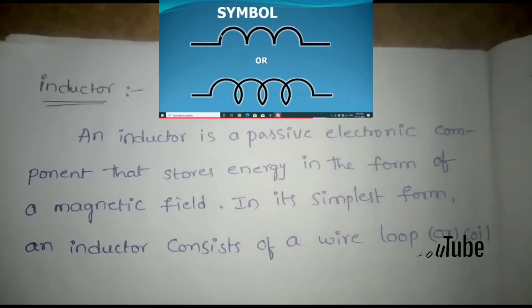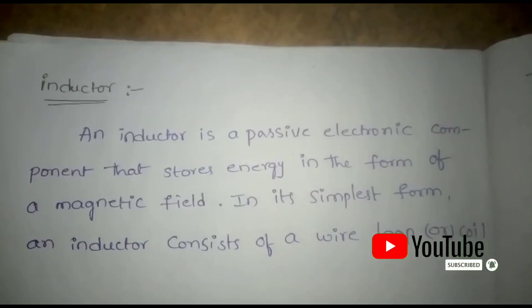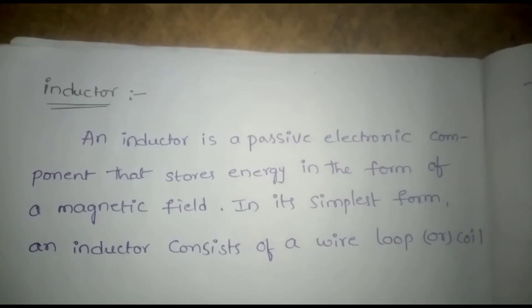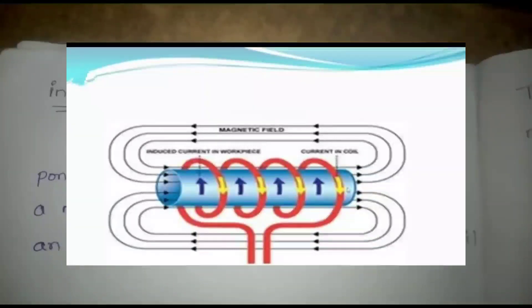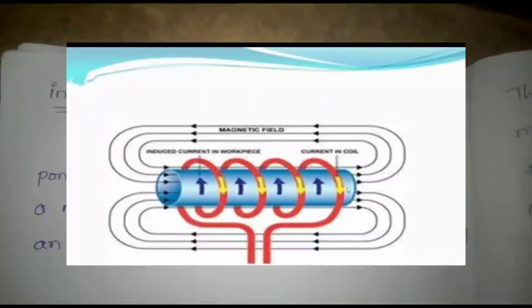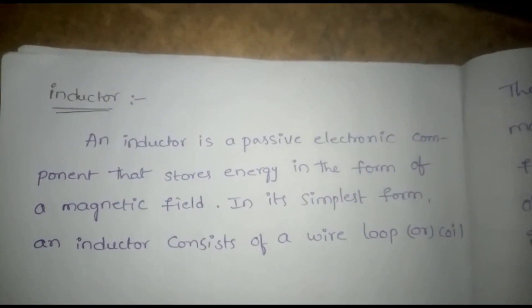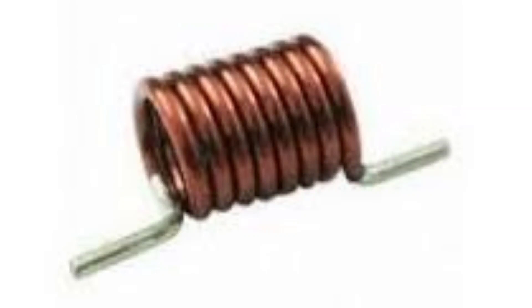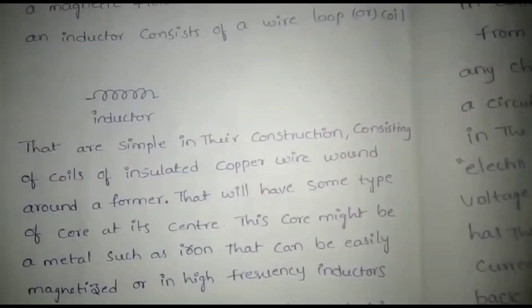We are discussing about the inductor. What is an inductor? An inductor is a passive electronic component that stores energy in the form of a magnetic field. In its simplest form, an inductor consists of a wire loop — coils of insulated copper wire wound around and around.